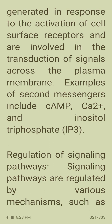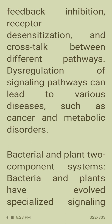Second messengers are small diffusible molecules generated in response to activation of cell surface receptors and involved in the transduction of signals across the plasma membrane. Examples include cAMP, Ca²⁺, and inositol trisphosphate (IP3). Signaling pathways are regulated by mechanisms such as feedback inhibition, receptor desensitization, and crosstalk between different pathways, and dysregulation can lead to diseases such as cancer and metabolic disorders.